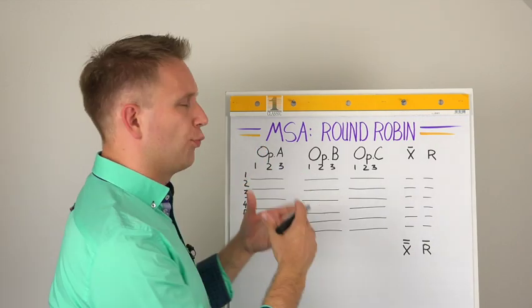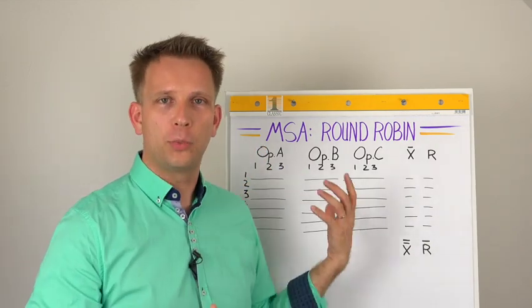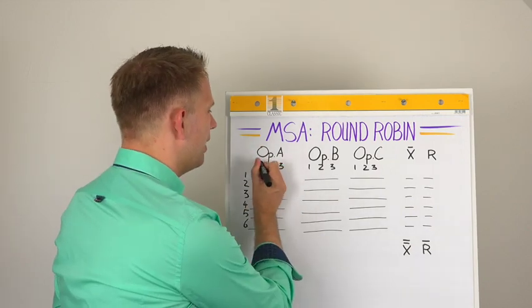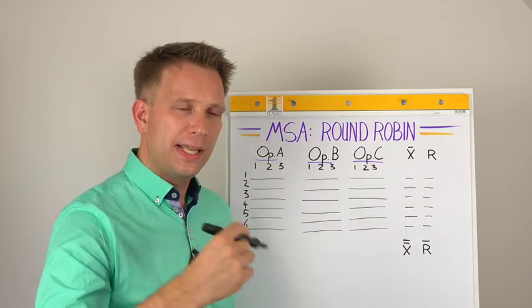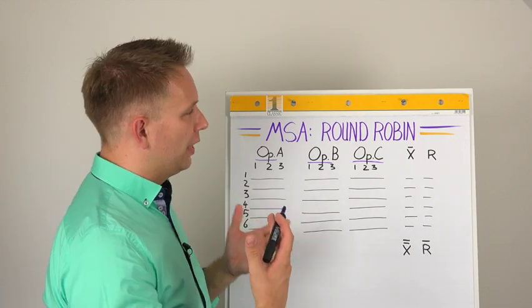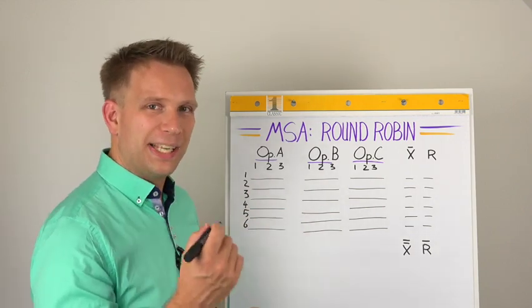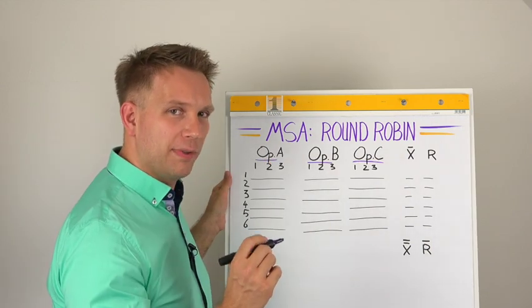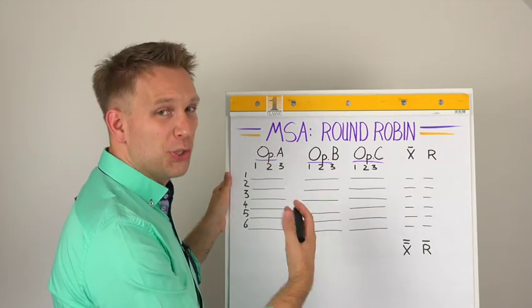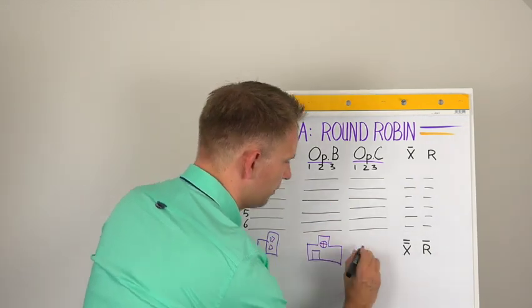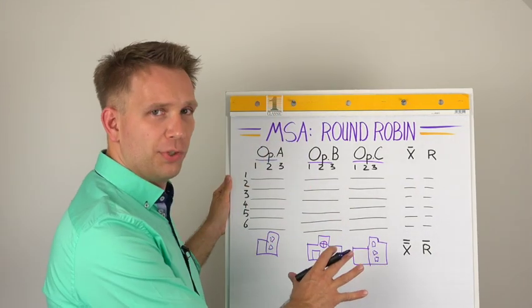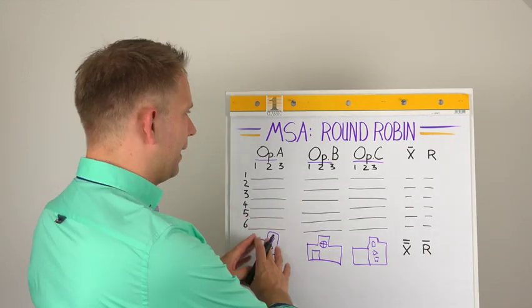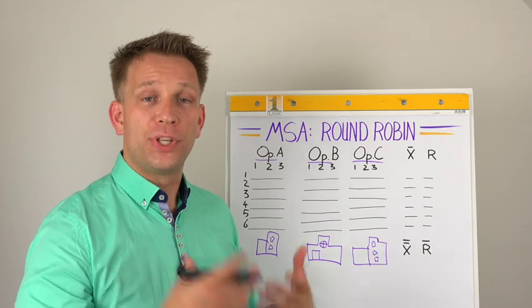Now where does this round-robin thing come in when we do gage R&R? In fact it's only about the operators. See, a ring trial or a round-robin basically means that instead of three operators using the same device, you are probably using three different laboratories. And these three laboratories all get the same sample and they send it to each of the laboratories to be tested.